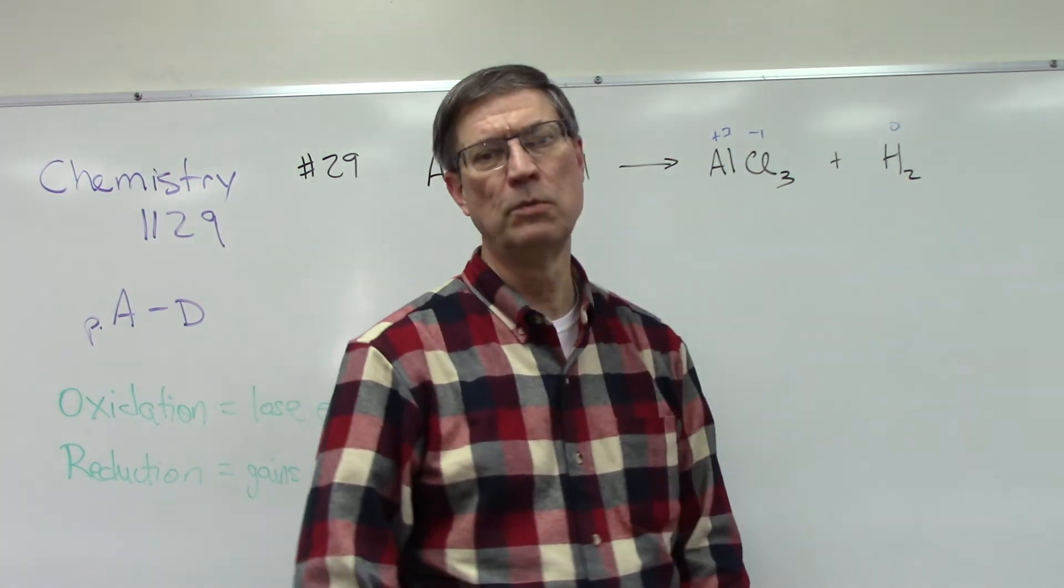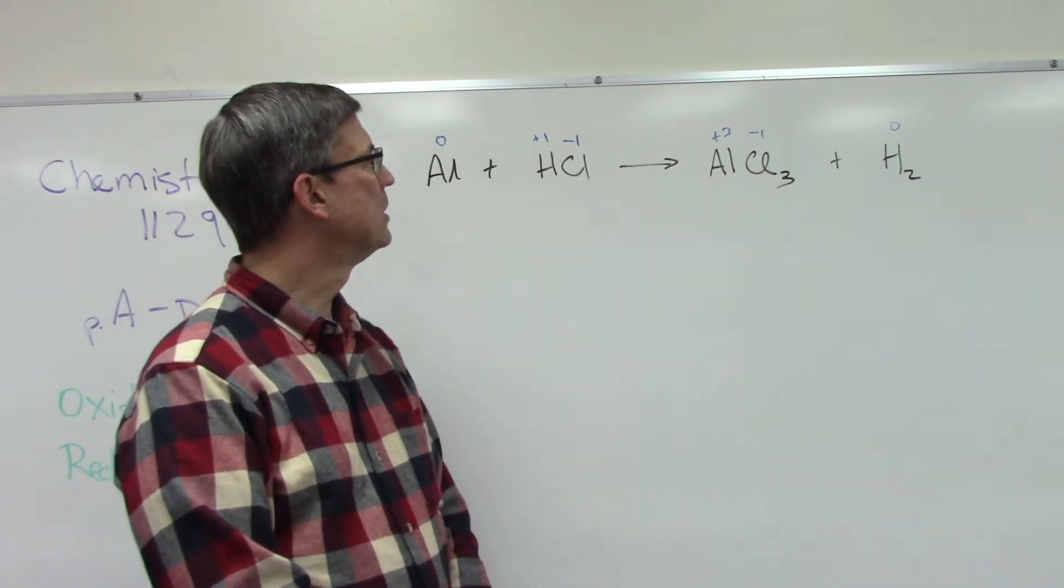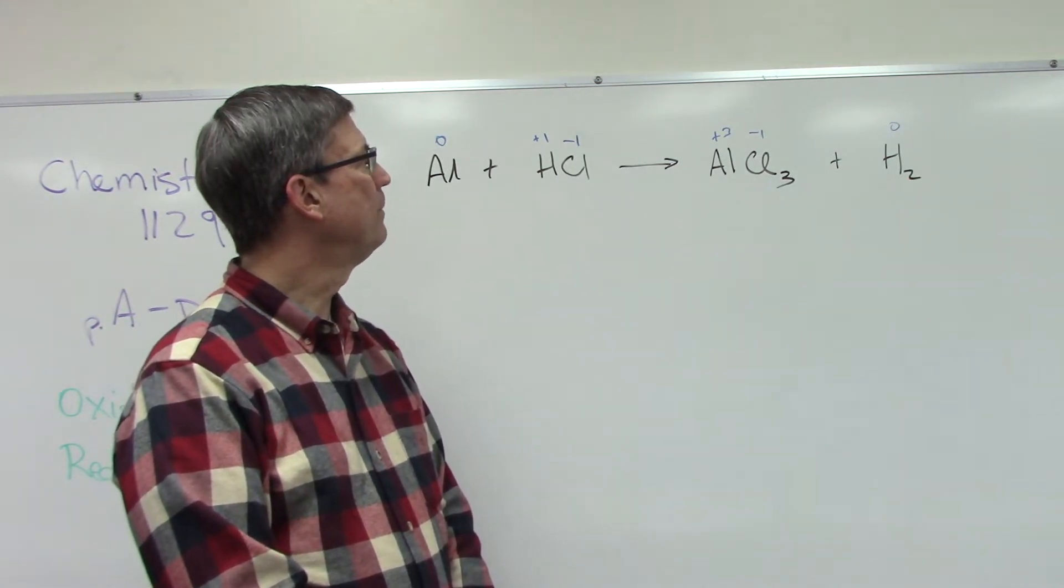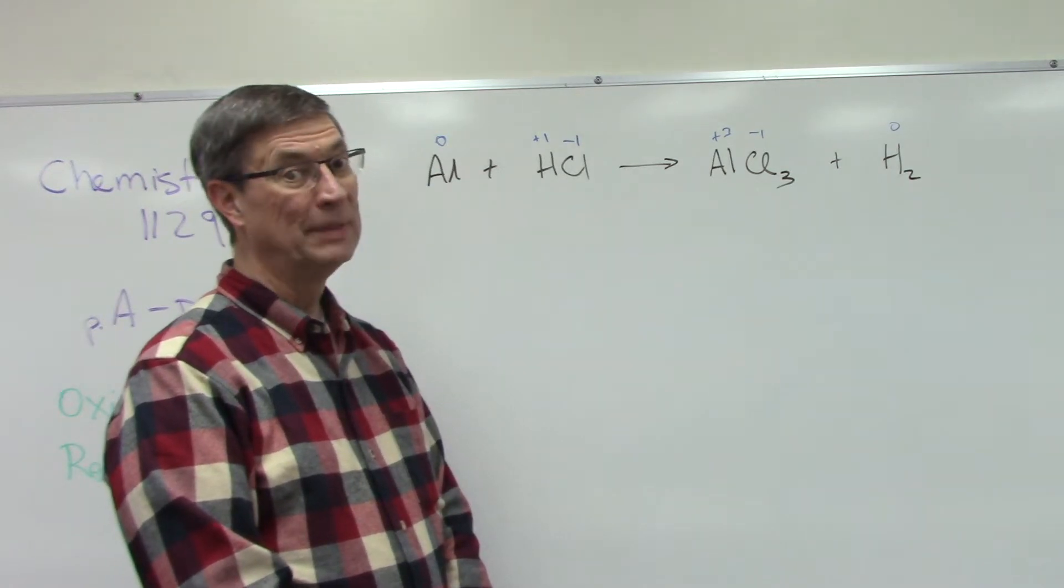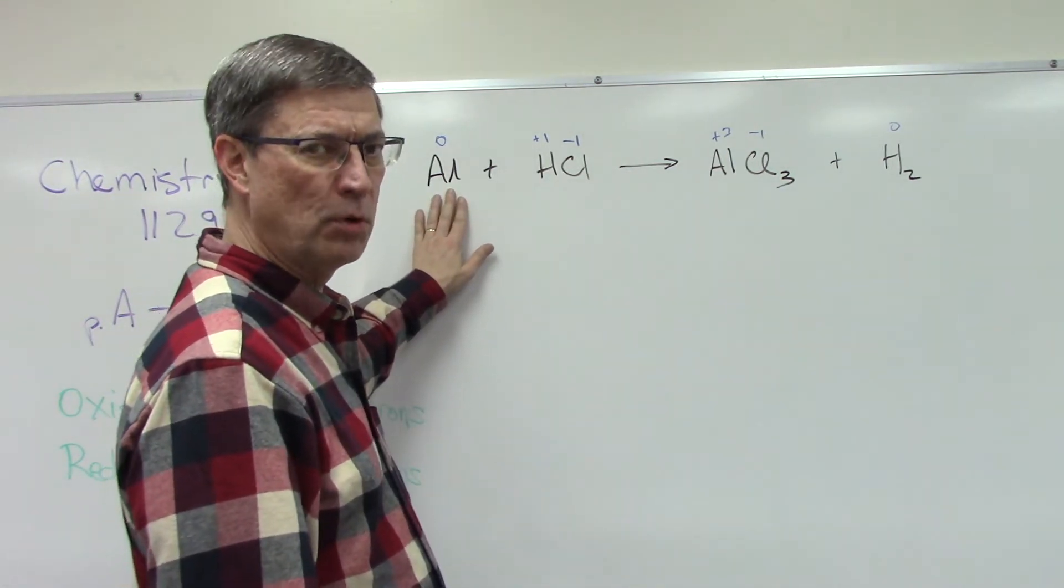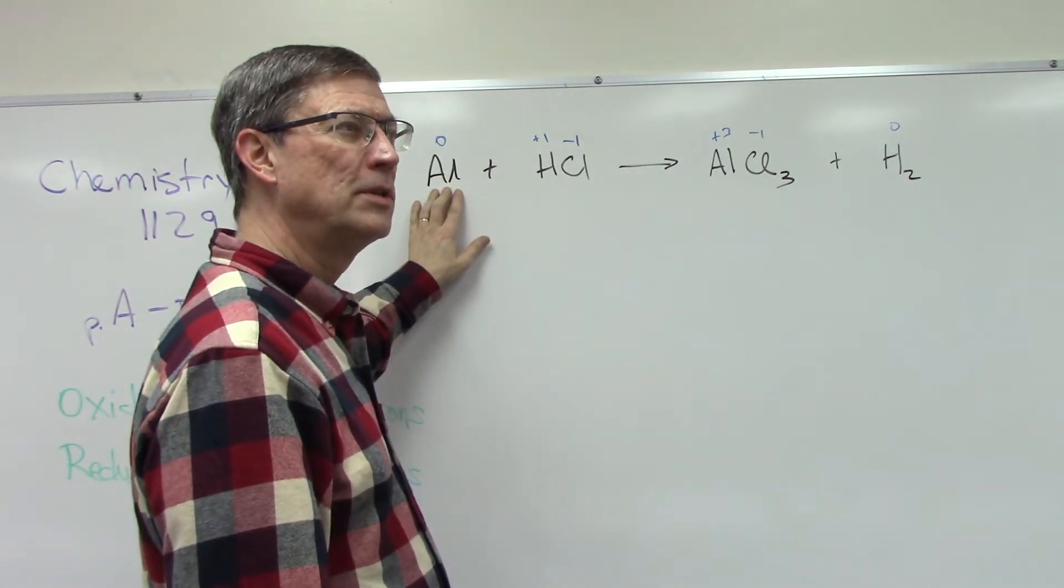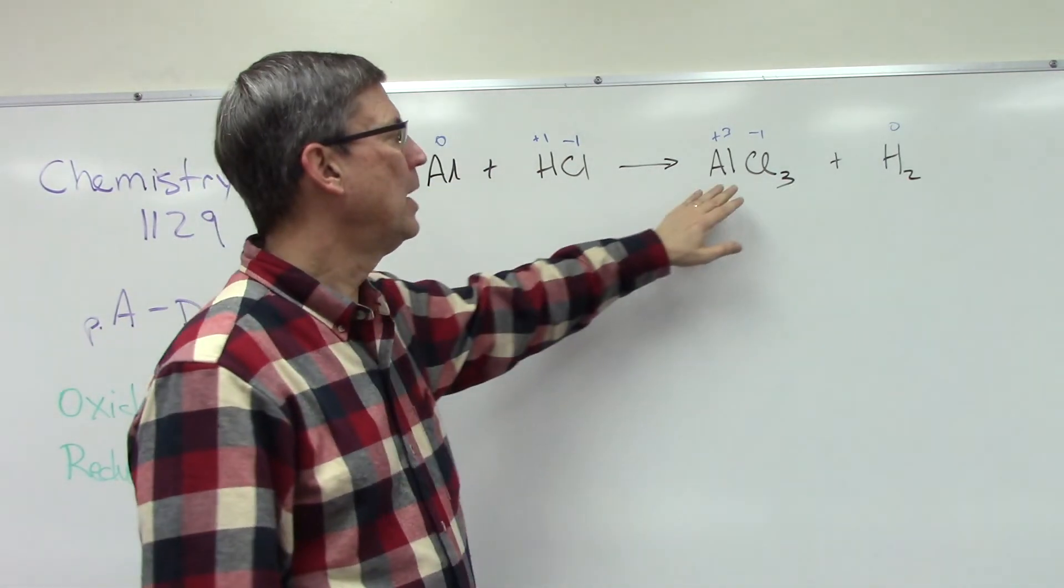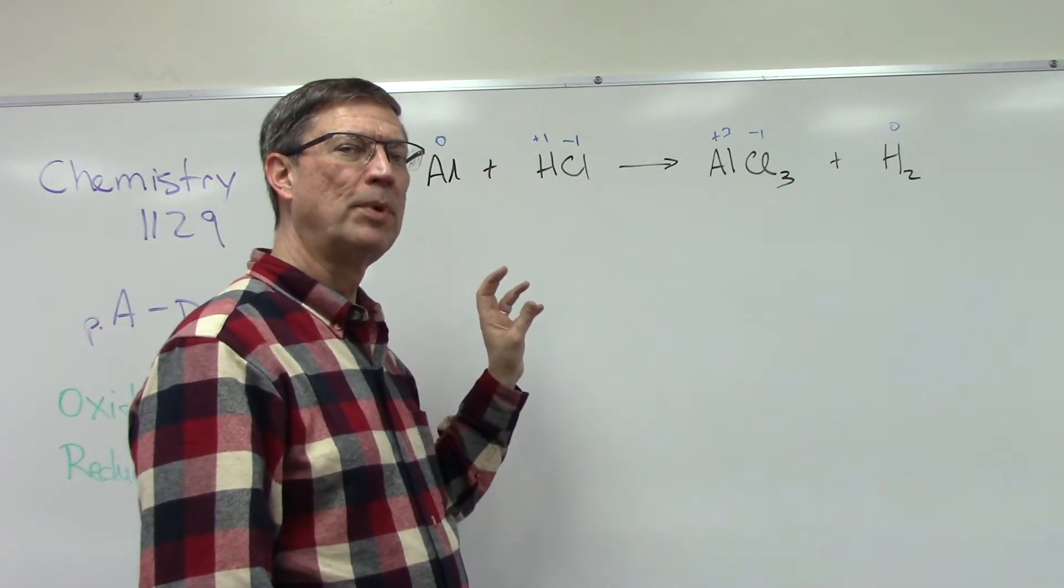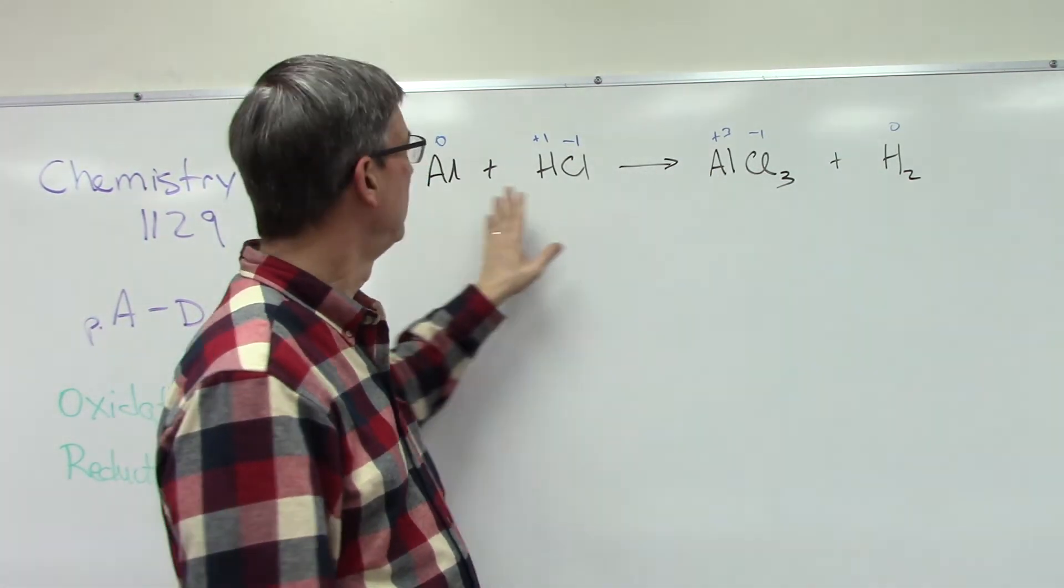Which of these - aluminum or hydrogen - they both change, right? Aluminum goes from zero to positive three. Chlorine stays the same, negative one to negative one. Hydrogen is going from positive one to zero. Which one is losing electrons? If aluminum has the same number of electrons as protons, then it's zero. But if it gives up some electrons, if it gives up some negative charges, then it ends up being positively charged. It's like a little pre-algebra problem - you get rid of some negatives, and so you're left more positive than what you were when you started at zero.